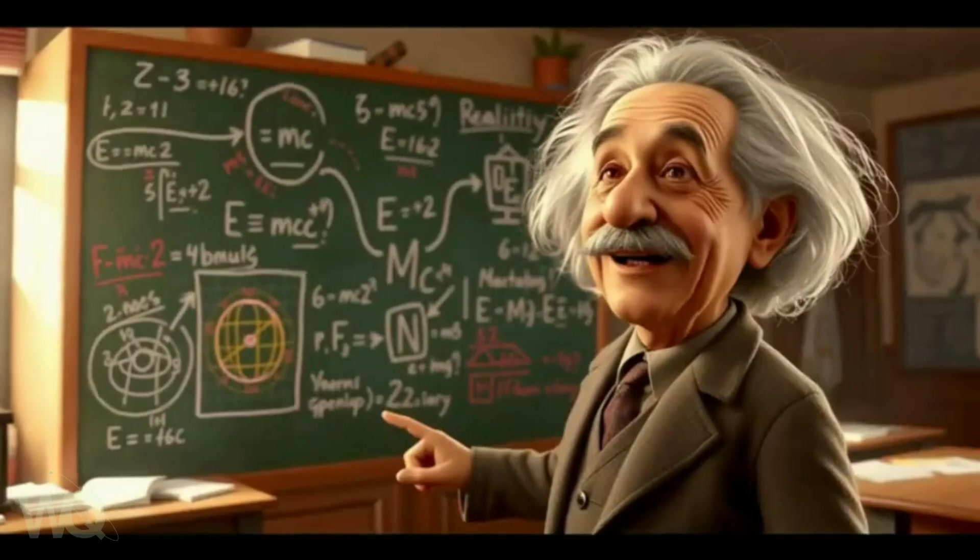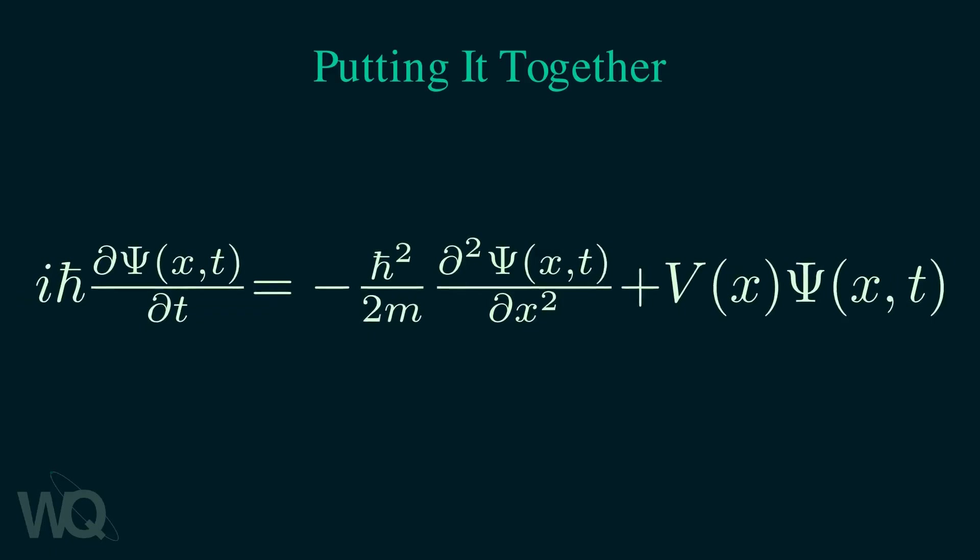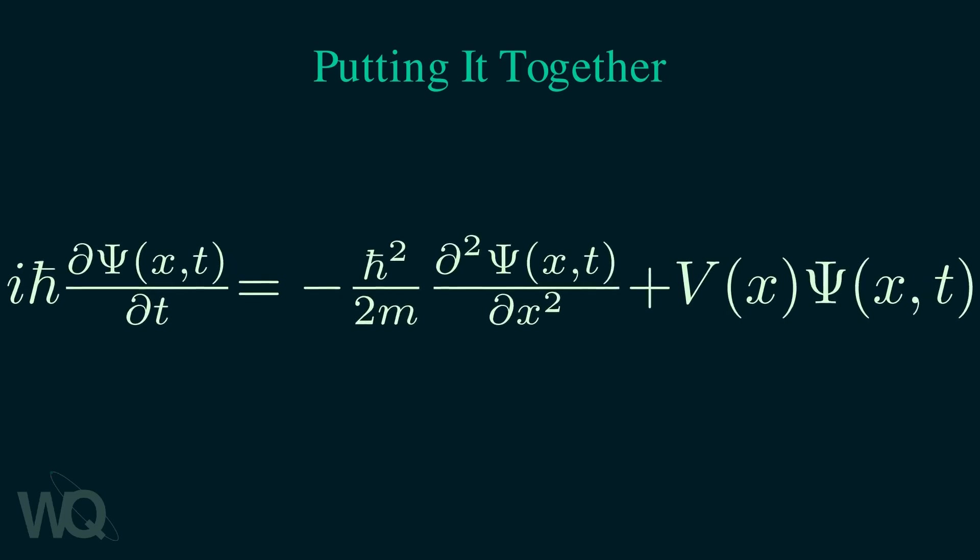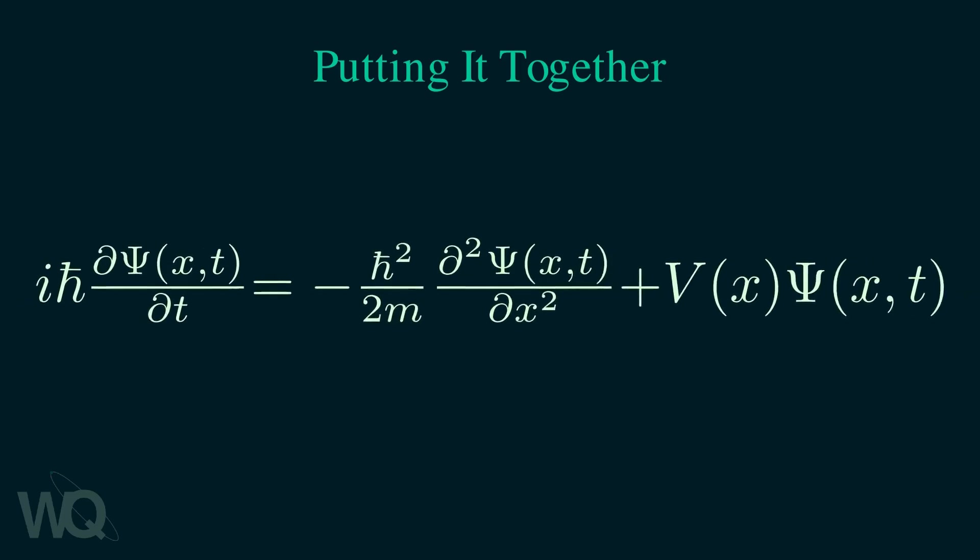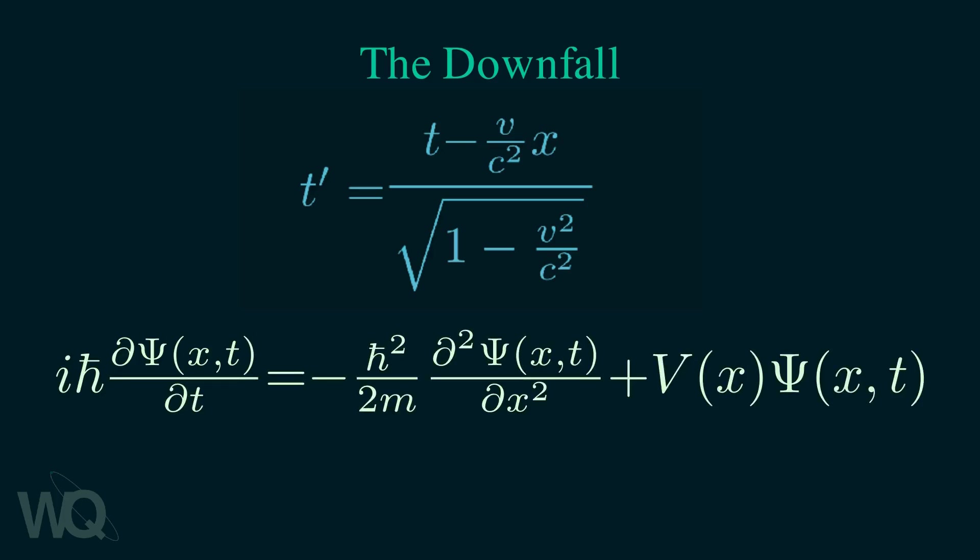However, this is not the end of the story. You see, the Schrödinger equation has one major flaw. It is not consistent with the theory of relativity. Einstein's special relativity mixes up the time and space coordinates into a soup. What this means is that you cannot discriminate between time and space. Both must be treated on equal footing. But the Schrödinger equation clearly treats time differently than space.